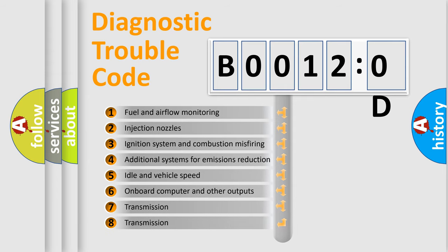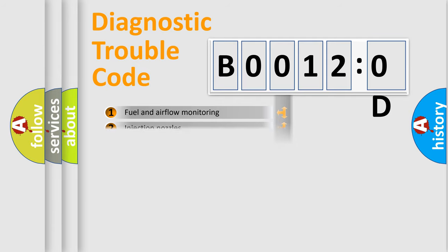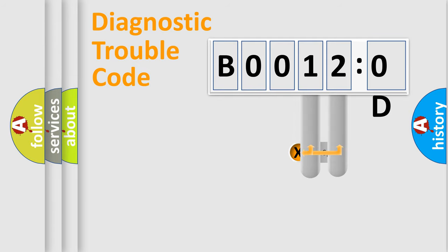The third character specifies a subset of errors. The distribution shown is valid only for the standardized DTC code. Only the last two characters define the specific fault of the group.